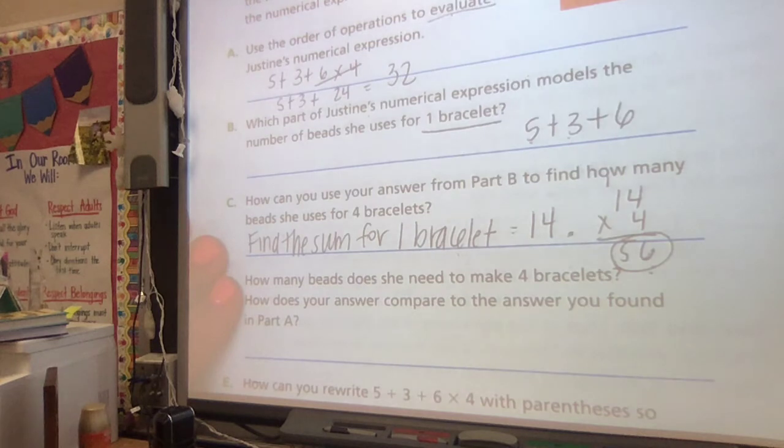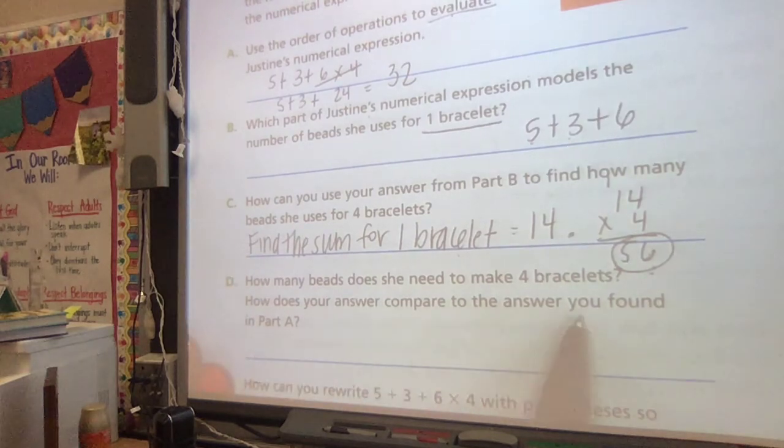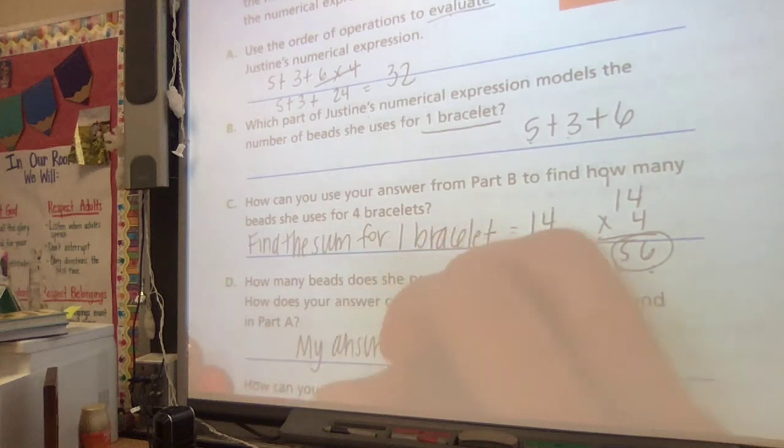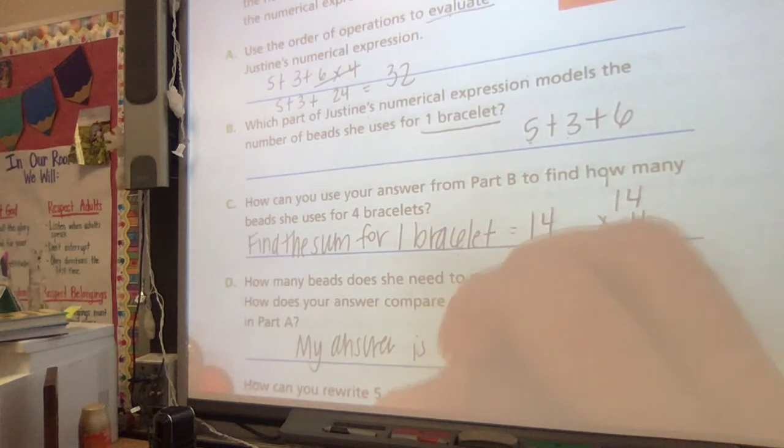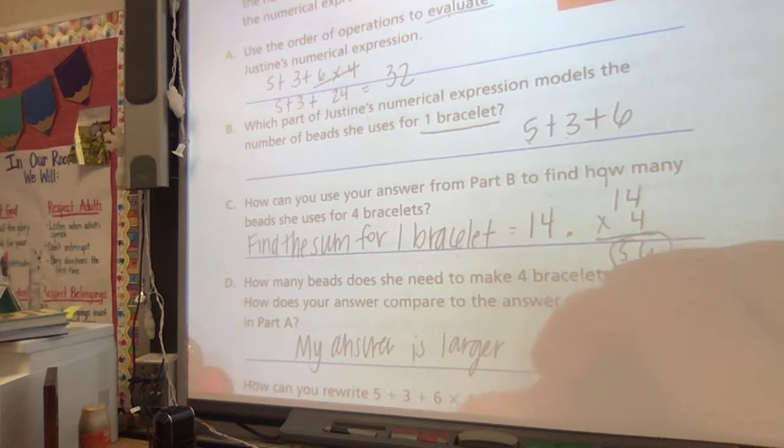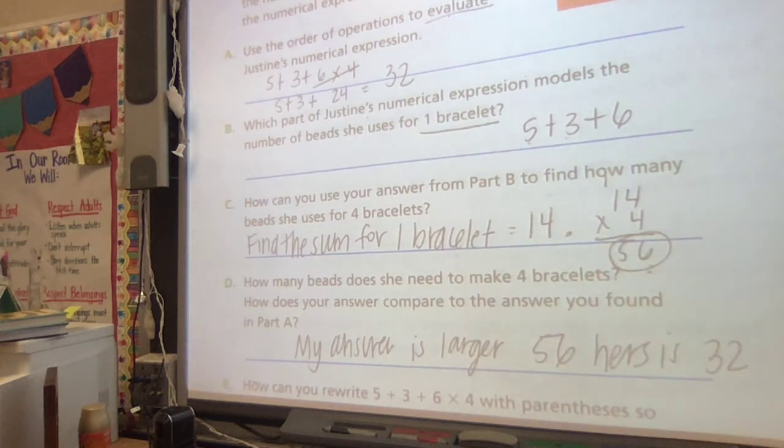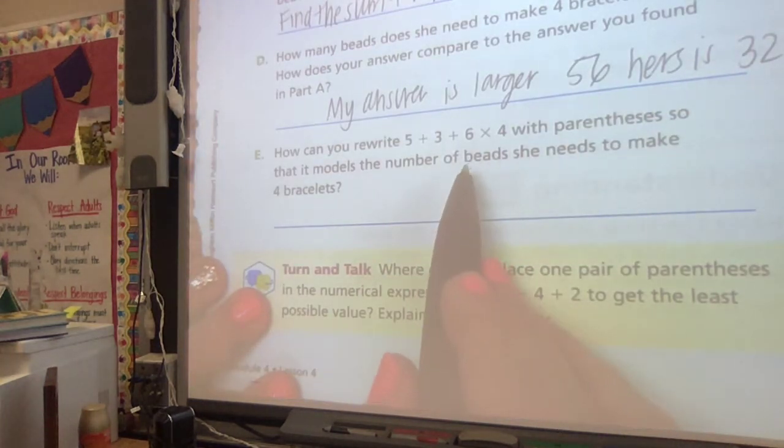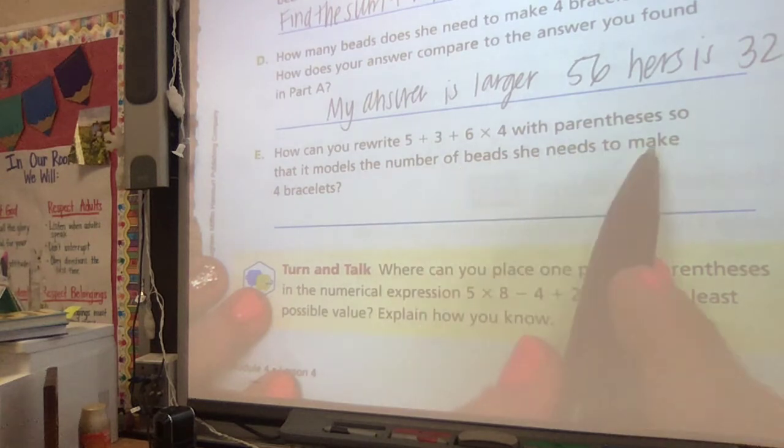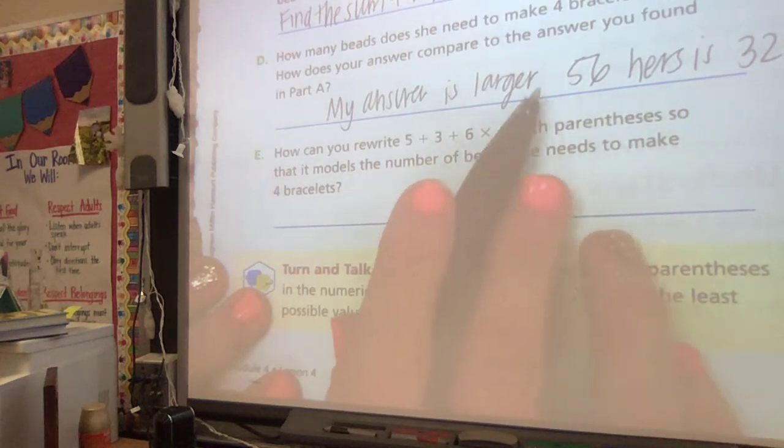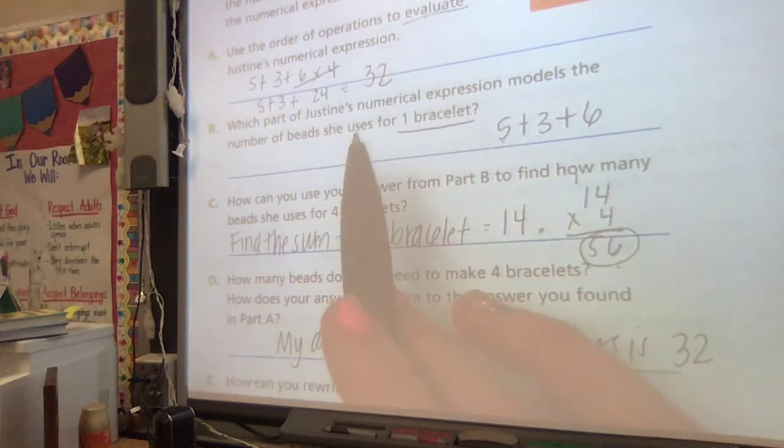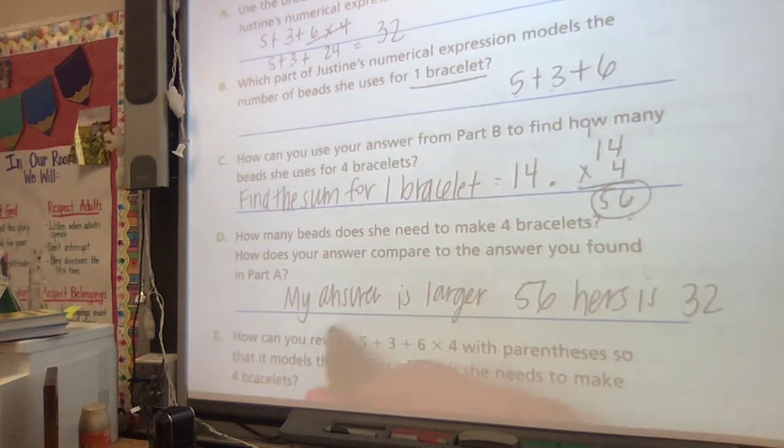How does your answer compare? My answer is larger, it's 56. Hers is 32. So how can we rewrite what she did with parentheses so that I'll make sure that I get my answer correct? Where is it that Justine needs parentheses in this problem?